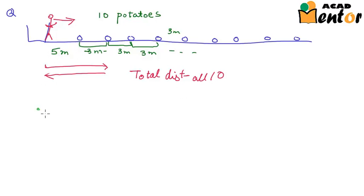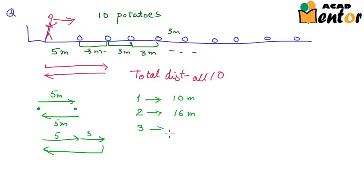Now how do we go over this? If you look here, the person starts from the basket, travels 5 meters and then comes back to put in the first potato. Hence, he travels 5 meters this way and 5 meters back. In the first go, to get the first potato, he traveled 10 meters. To get the second potato, he would have to travel 5 meters plus 3 meters and the same distance back. That means 5 plus 3 is 8 and 8 into 2 is 16. So he travels 16 meters to get the second potato. In order to get the third potato, he would travel 5 plus 3 plus 3 to reach the potato, picks it up and comes back this much distance.